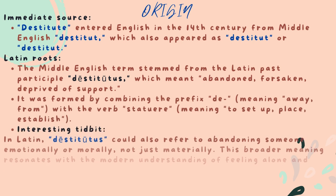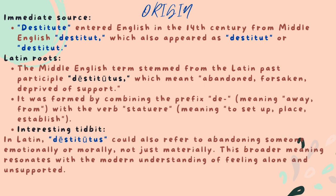Origin. Immediate source: destitute entered English in the 14th century from Middle English 'destitute'. Latin roots: the Middle English term stemmed from the Latin past participle 'destitutus,' which meant abandoned, forsaken, deprived of support. It was formed by combining the prefix 'de-,' meaning away or from, with the verb 'statuere,' meaning to set up, place, establish.